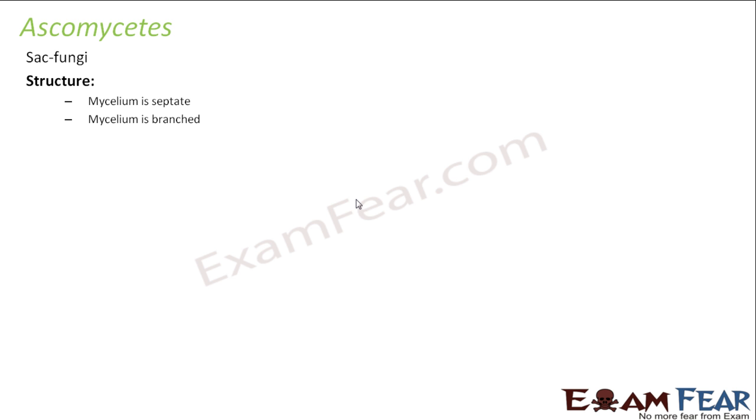The second category of fungi is ascomycetes, commonly known as sac fungi. Due to the presence of sac-like structures, these fungi are called ascomycetes. Their mycelium is septate and branched, meaning cross walls are present inside the mycelium, dividing it into uninucleate or multinucleate cells. The mycelium is also filamentous in structure.